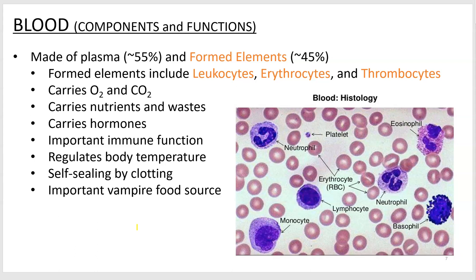Welcome to the first PowerPoint presentation on the blood unit. We'll start off with the different types of cells and other structures in blood. Blood is mostly a liquid called plasma, and the cells and things you find in it are called formed elements. There are three basic groups of those.